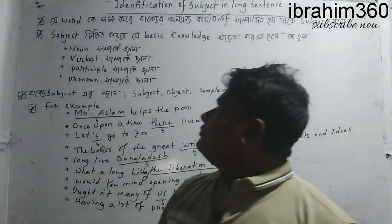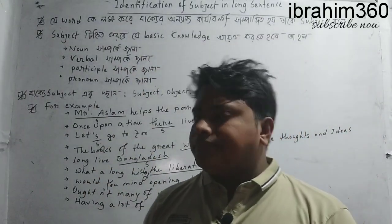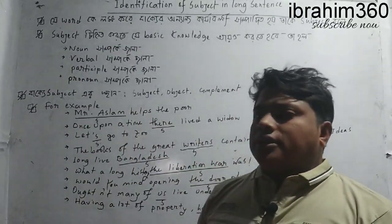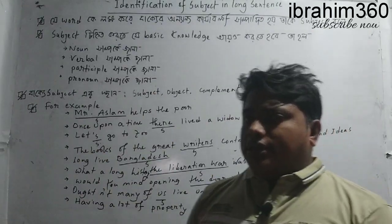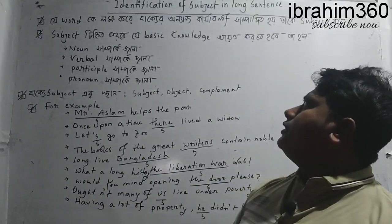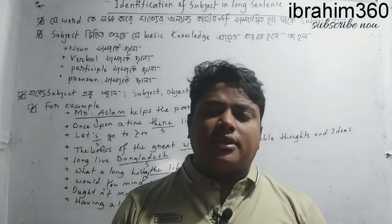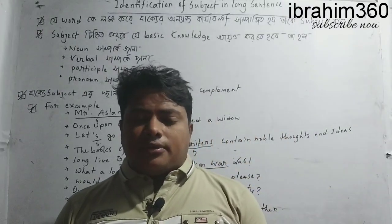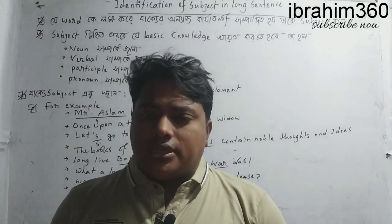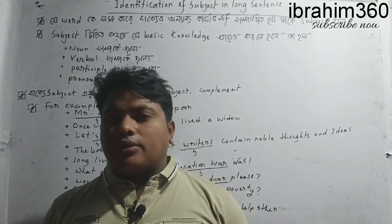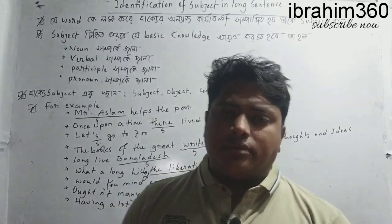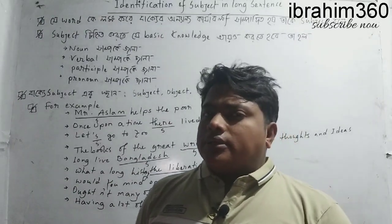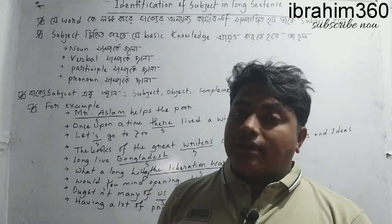We know that the word that we have learned is the subject. When we learn the subject, we will learn basic knowledge and basic ideas. When we identify the subject, we have a lot of different nouns — common noun, collective noun, abstract noun, material noun, countable noun, and uncountable noun. So our subject can be automatically and easily found out.